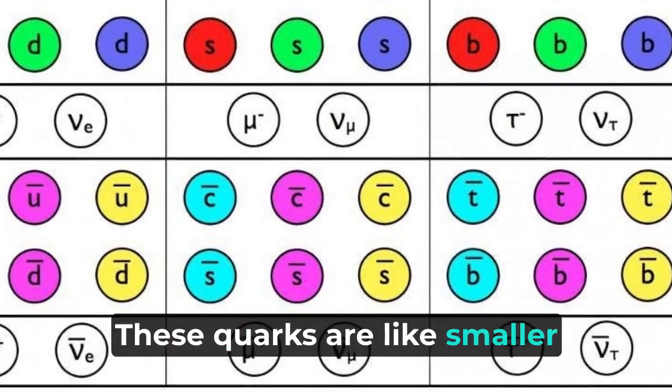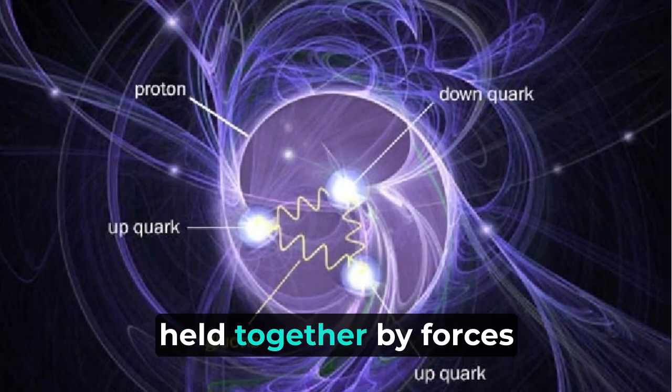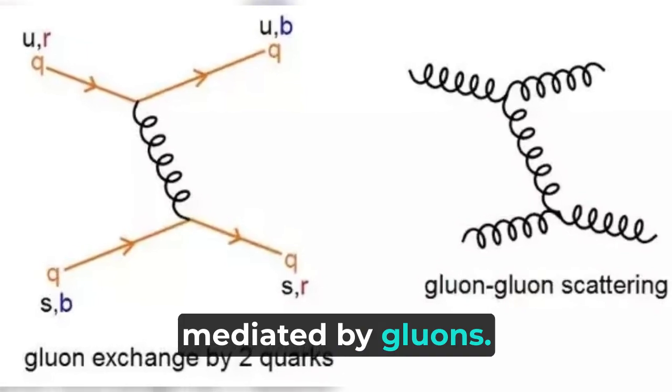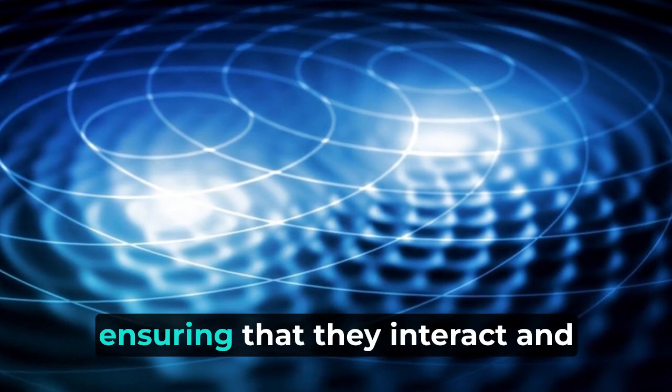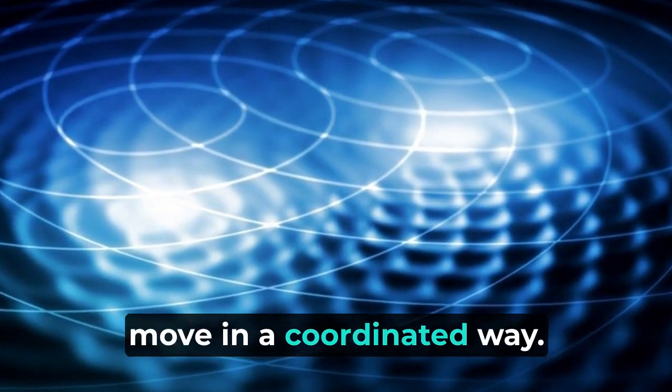These quarks are like smaller swirls within the larger pattern, held together by forces mediated by gluons. Think of the gluons as the currents of air that keep the swirls together, ensuring that they interact and move in a coordinated way.